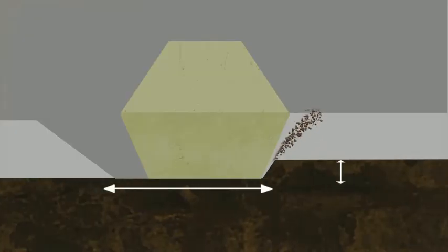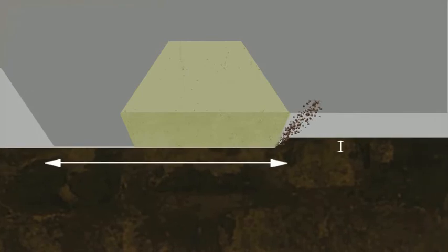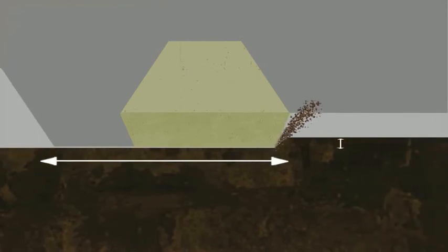The bit is now entering a more abrasive formation. Diamonds wear out in the abrasive formation, increasing the wear-flat surface, decreasing the depth of cut and decreasing the rate of drilling penetration.